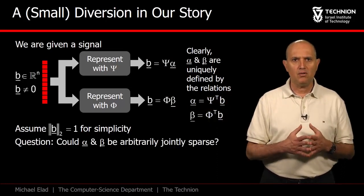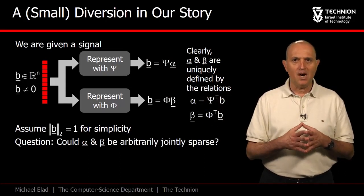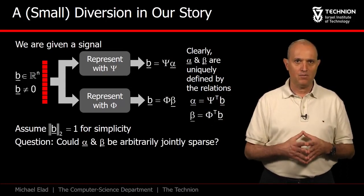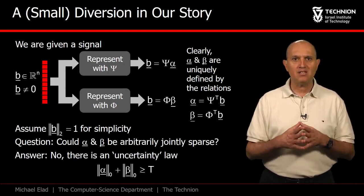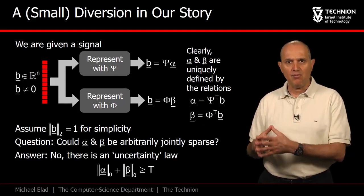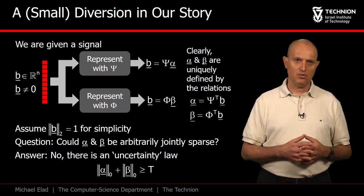The question we will concentrate on is this: could α and β be arbitrarily and jointly sparse? As we are about to show, the answer is negative. We will prove an uncertainty rule that says that the sum of the number of non-zeros in α and β must be above a certain threshold.